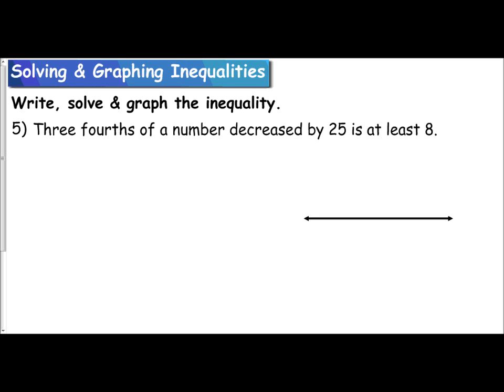So let's start with three fourths of a number decreased by 25 is at least 8. I know from the first part I am going to have three fourths of, means multiply, a number being our variable. So I have three fourths x decreased by, means subtraction.